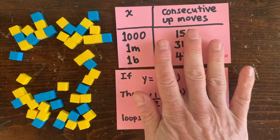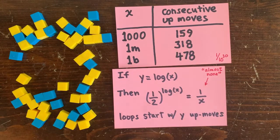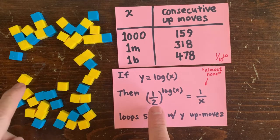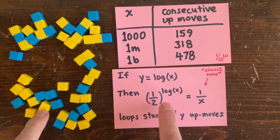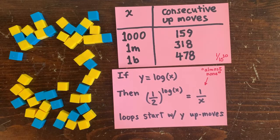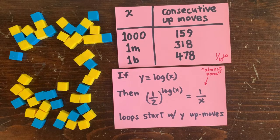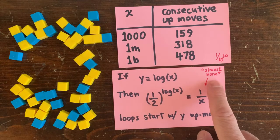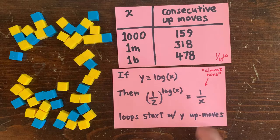This makes sense. So imagine y were just log x, and the chance of the first y operations all being up moves would be a half to the log x, which is 1 over x. And as x increases, the chance of such a loop approaches 0.